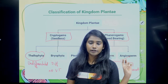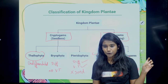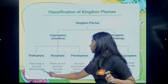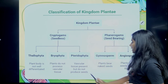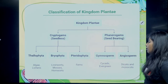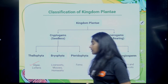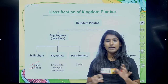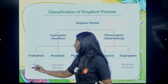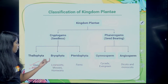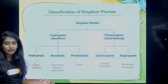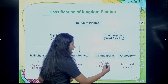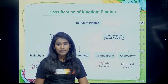Phanerogams have a differentiated plant body, vascular tissue (xylem and phloem), and they also produce seeds. Examples for bryophyta are liverworts, mosses, and hornworts. Pteridophyta's example is ferns. Gymnosperm examples include cycad and evergreen trees. In gymnosperm, seeds are present for reproduction but fruits and flowers are very rare.